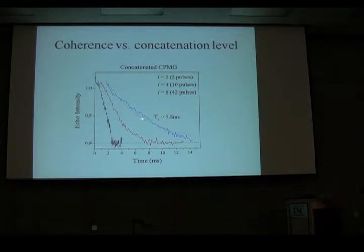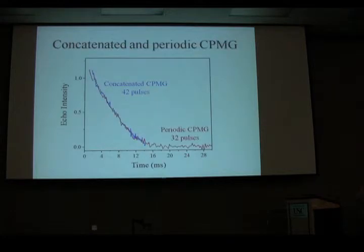What we're seeing here is we have at concatenation level here we have 2 pulses. Here we have 10. The next level is 42. We're at about 6 milliseconds there. And in fact what you can do is you can compare the concatenated CPMG and a periodic CPMG. And in fact the concatenated seems to take a few more pulses to get the same sort of level of protection of your spin. So at least on this basis the concatenated doesn't seem to be buying us a lot for the CPMG.